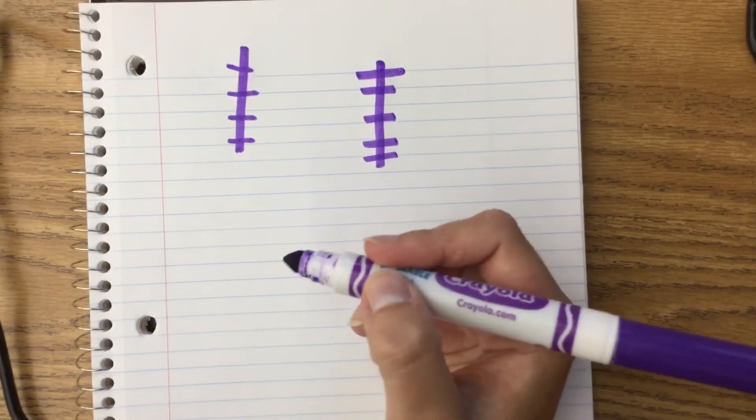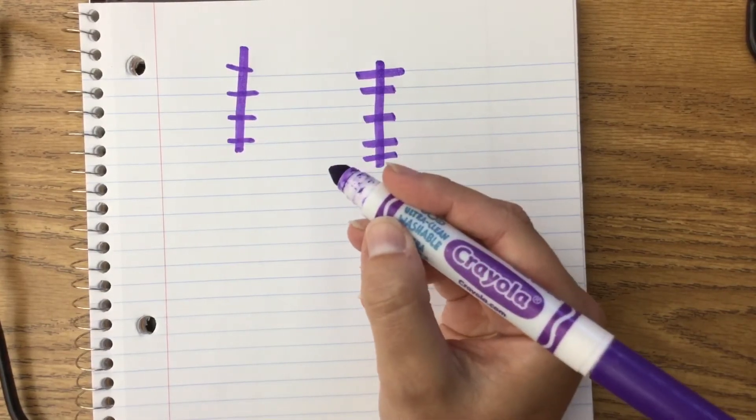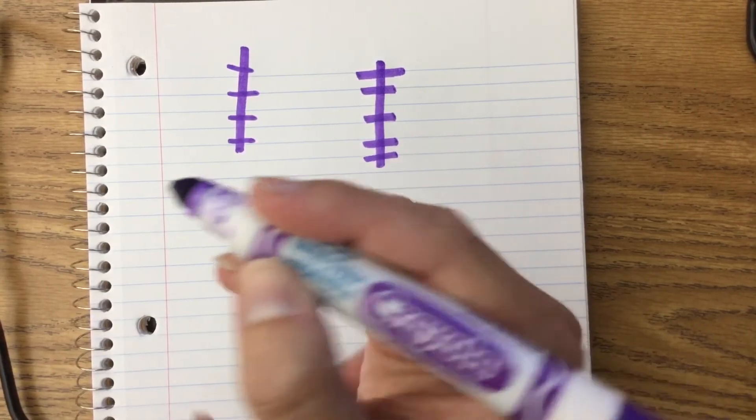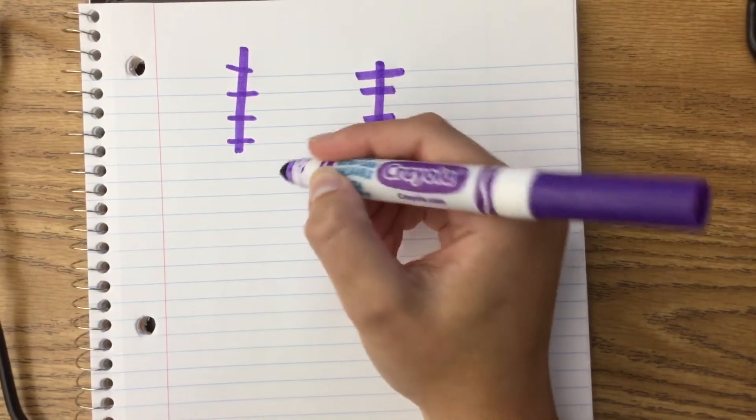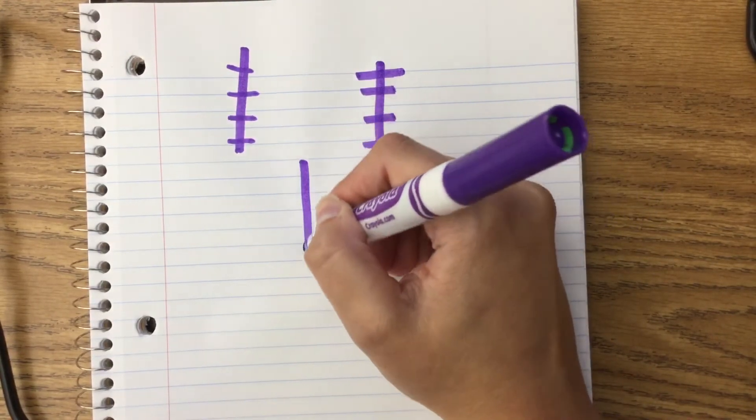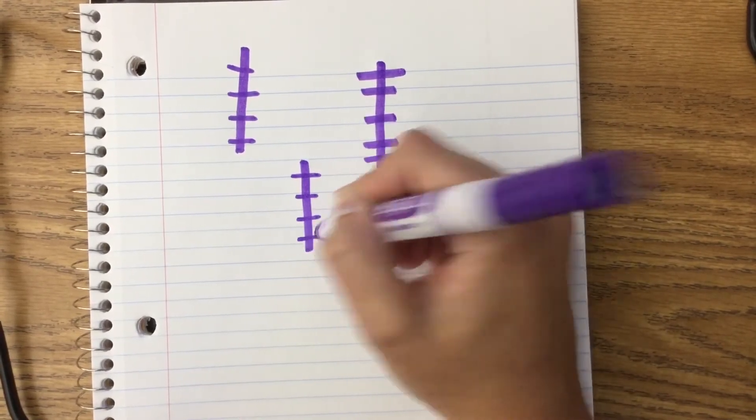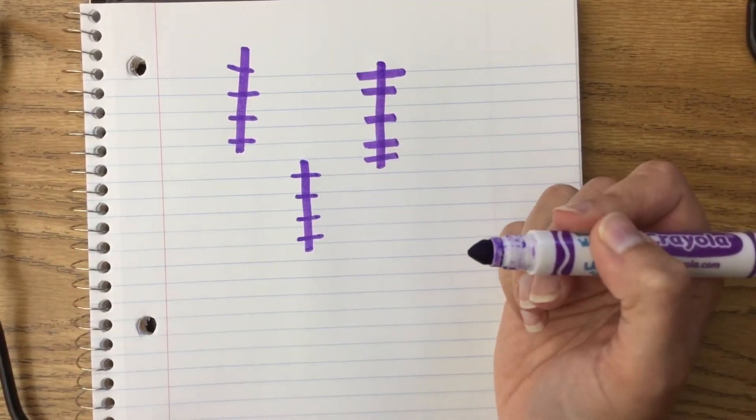It's also important to remember that your hand should be on the table. So you're holding your pen between your fingers, and your hand is down here on the table. I'm going to show you one more time, and then it will be your turn. Down, across, across, across, across, across. Now you know how to draw fish bones.